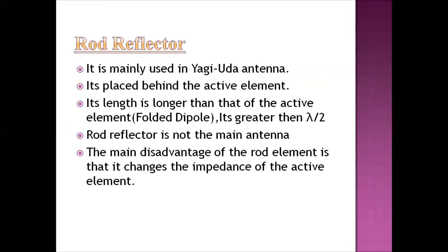The folded dipole has a length of lambda by 2. The rod reflector length is greater than lambda by 2. The main antenna is the folded dipole — the active element. This rod reflector has a drawback, which is discussed as a disadvantage. More details in the next video's comment section.